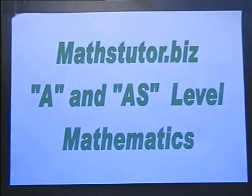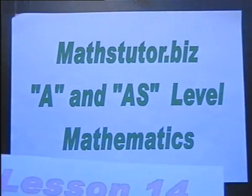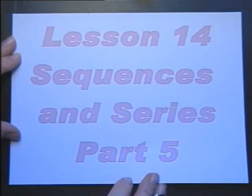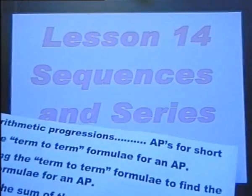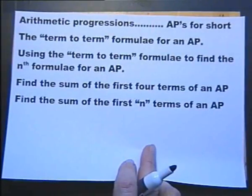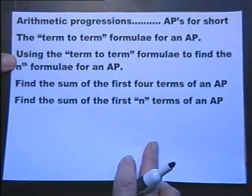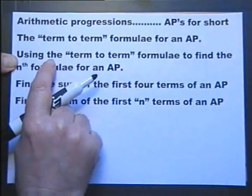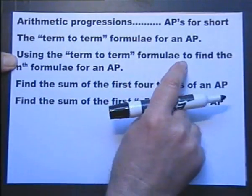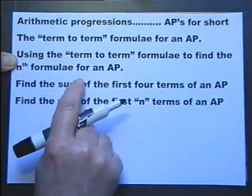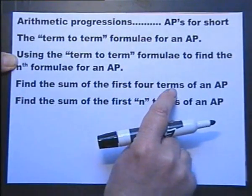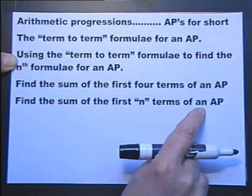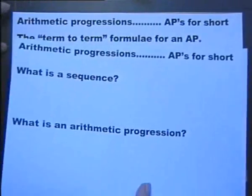A and AS level mathematics lesson 14, looking at sequences and series for the fifth time. In this lesson we're going to be looking at arithmetic progressions — APs for short — the term-to-term formula for an arithmetic progression, using the term-to-term formula to find the nth term formula, finding the sum of the first four terms, and finding the sum of the first n terms of an arithmetic progression.